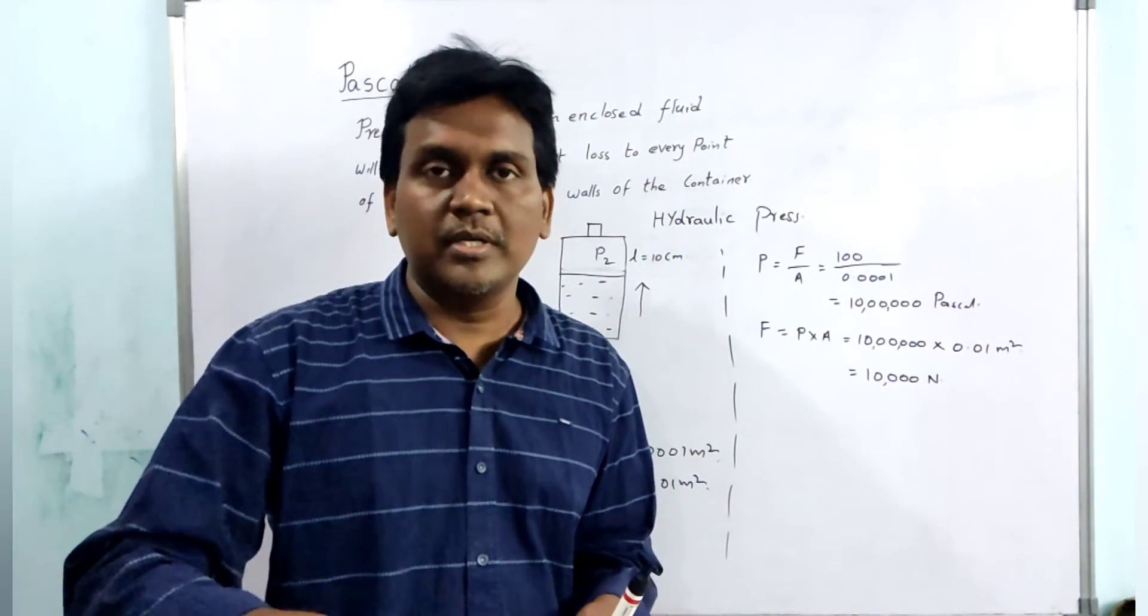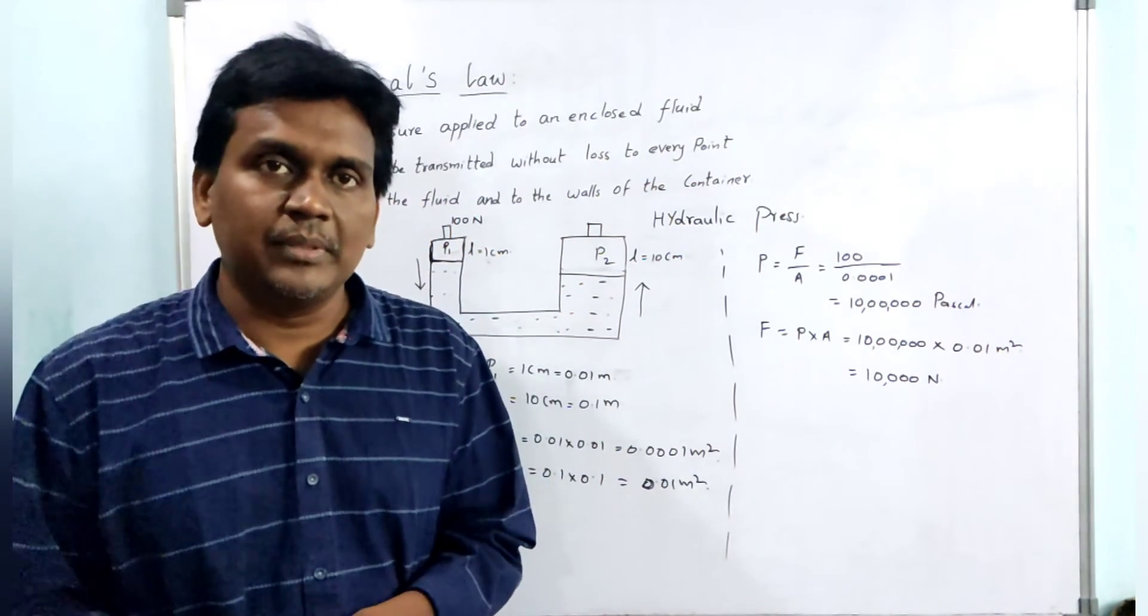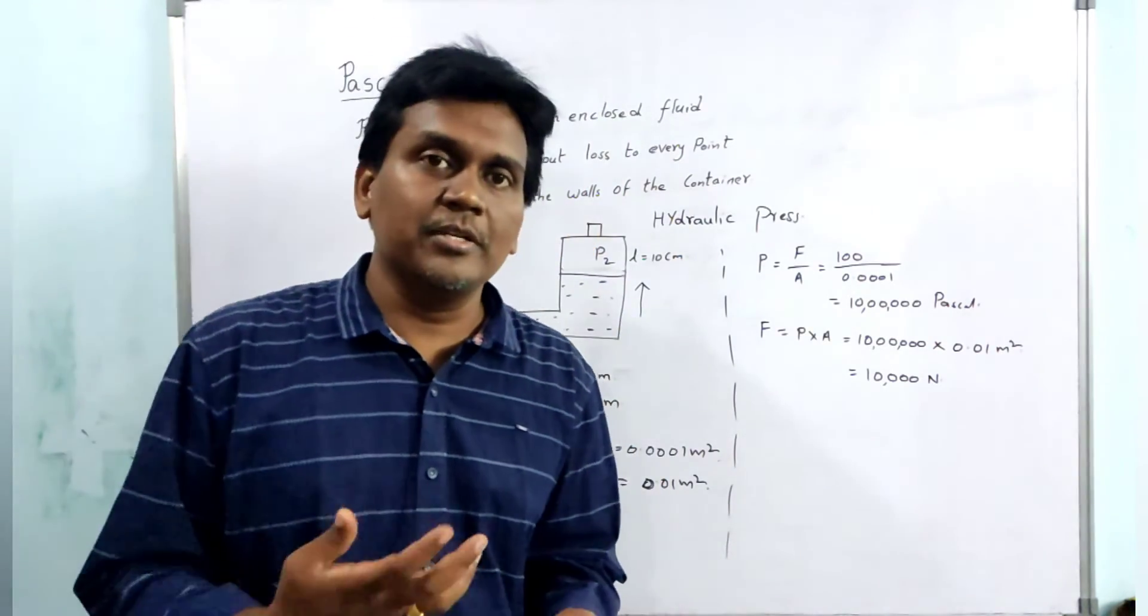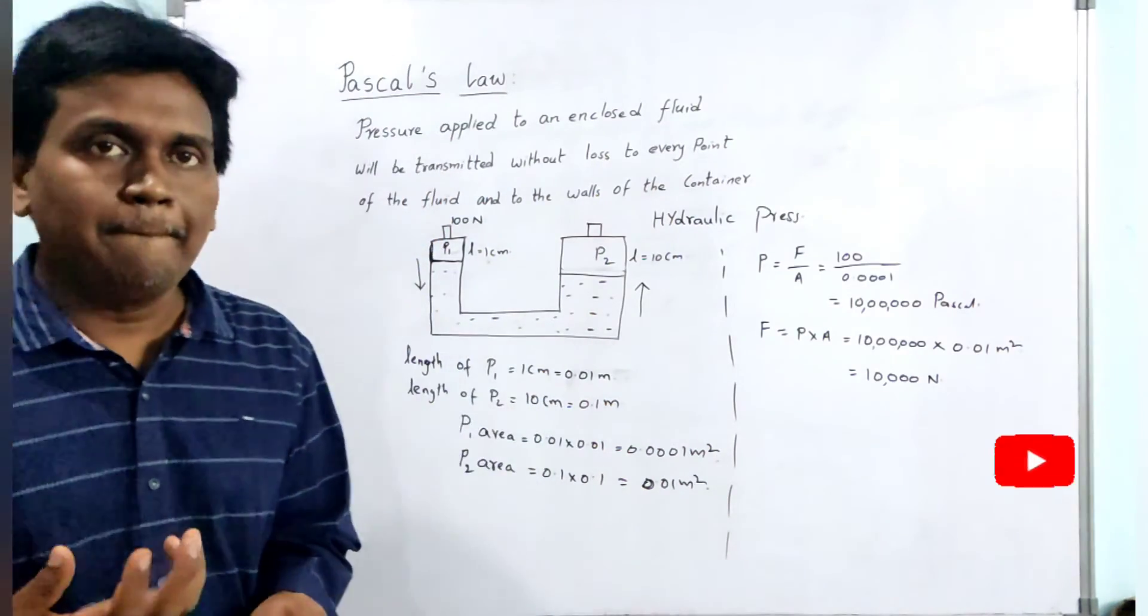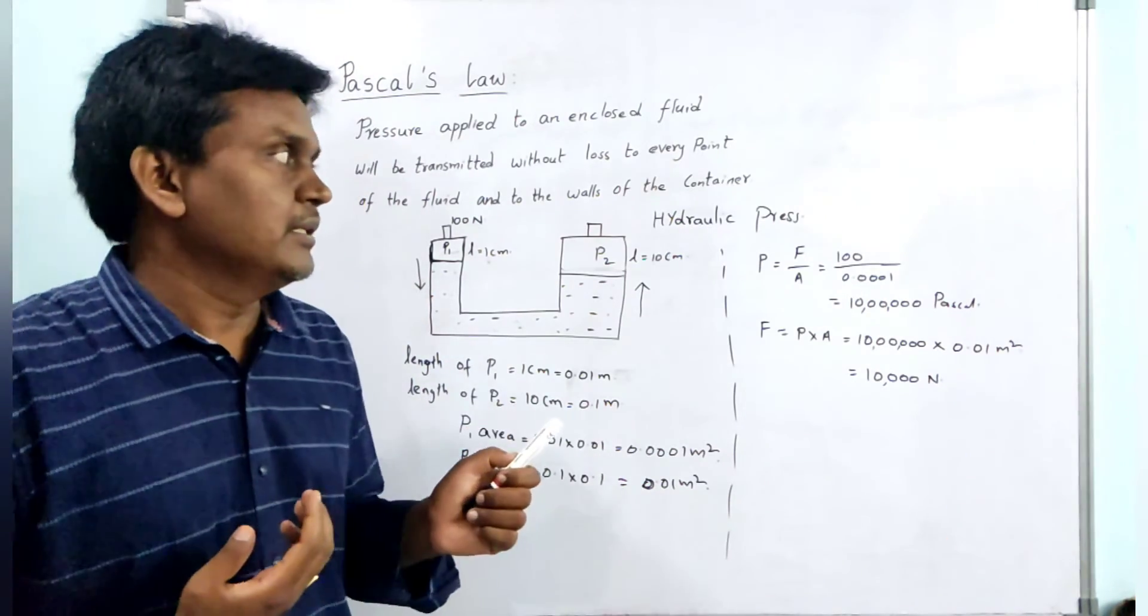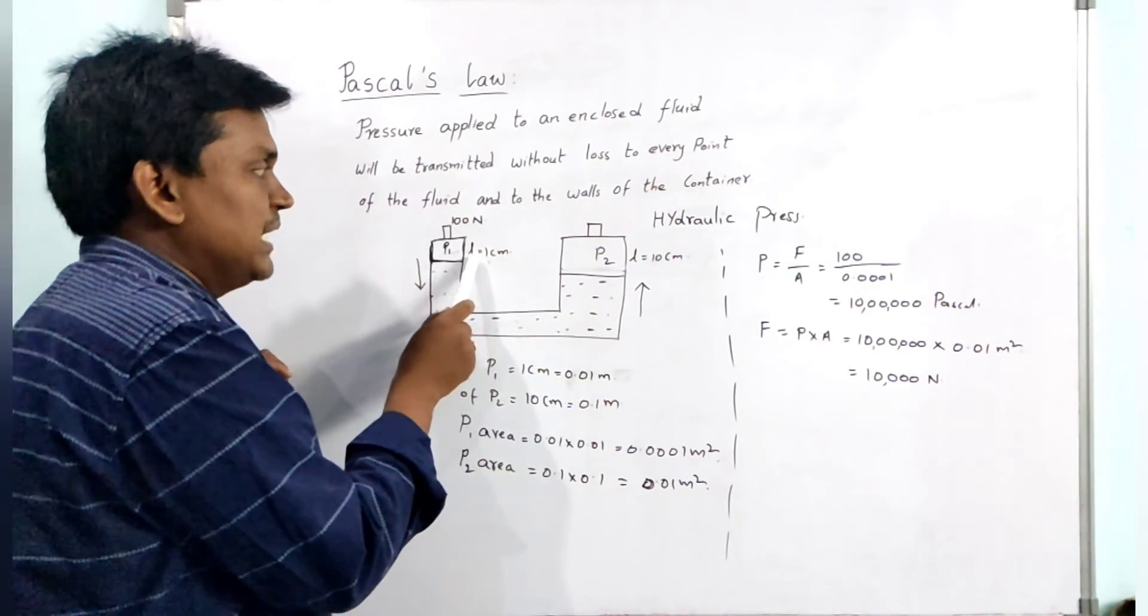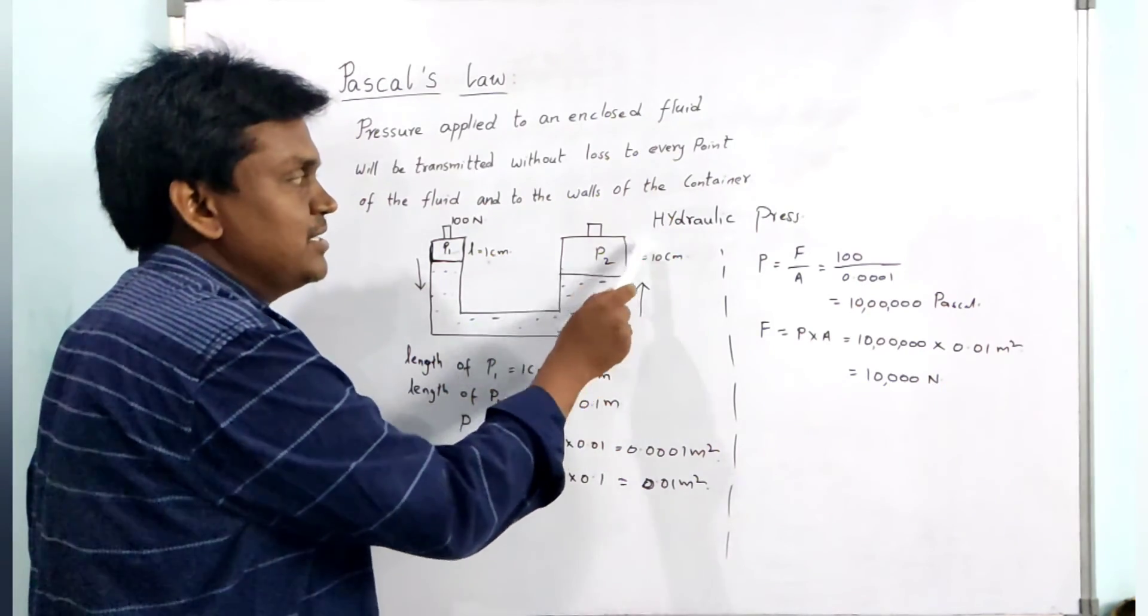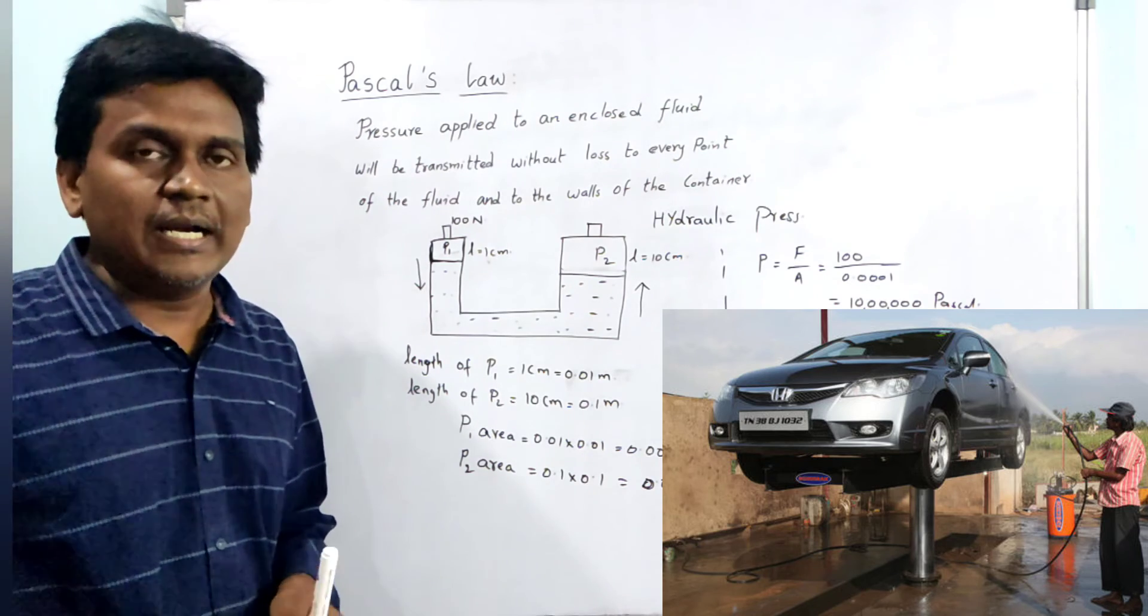As the downward force is 10,000 Newton, if the upward force is more than 10,000 Newton, then only the car will be lifted up. If we apply such force more than 10,000 Newton, the car will be lifted up. This can be done by using this hydraulic press. This hydraulic press will use very little amount of force, and that little amount of force will be converted as large amount of force here to lift very heavy bodies and objects.